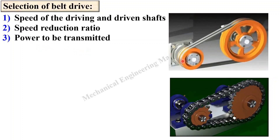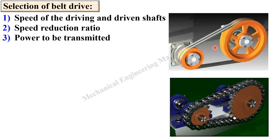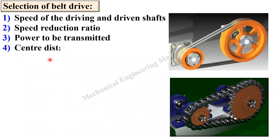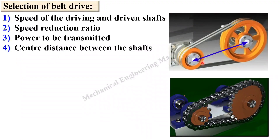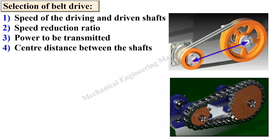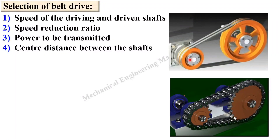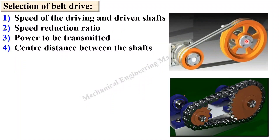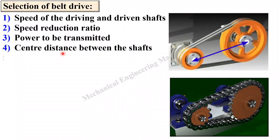Next, power to be transmitted — that means how much power is required to transmit. Next, center distance between the shafts. Here you can see this is the driving shaft and this one is the driven shaft, and the distance between these two is known as the center distance.